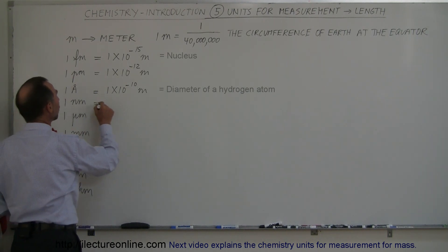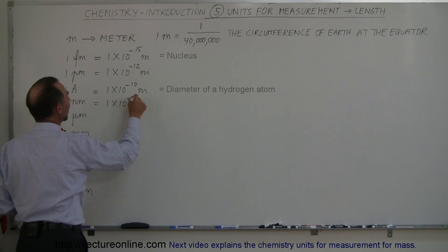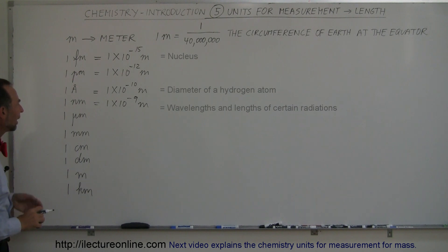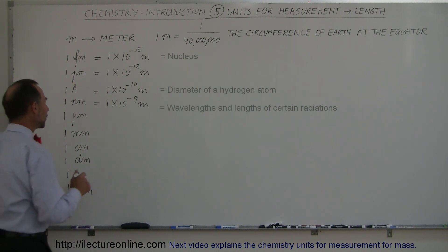Nanometers is 1 times 10 to the minus 9 meters. We use nanometers for wavelengths and the length of certain kinds of radiation that are involved in the reactions that we have with electrons in the nucleus of atoms.